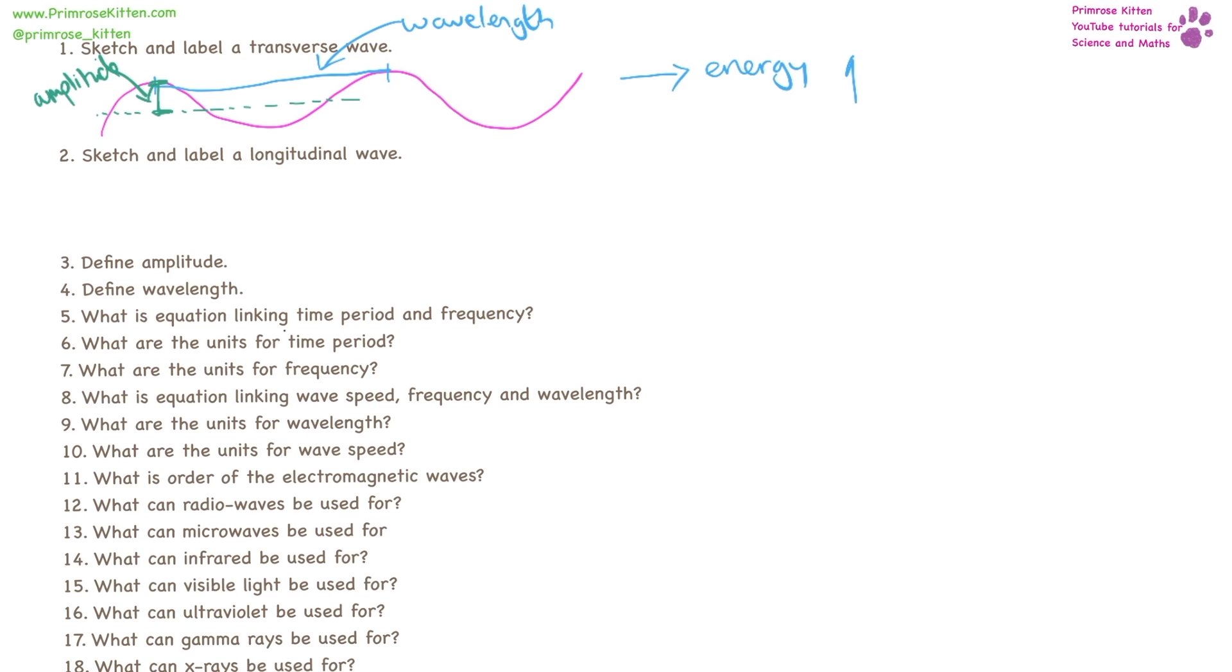Our direction of energy is this way. However, our direction of oscillation or movement is up and down. In a longitudinal wave, we have areas of compression and areas of refraction. We have the direction of energy going this way and the movement going that way as well.